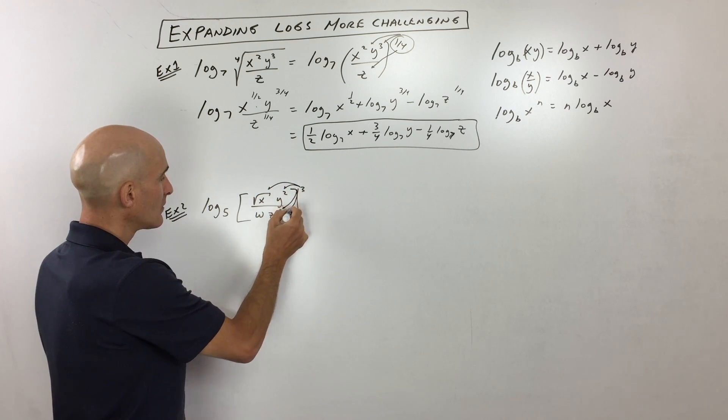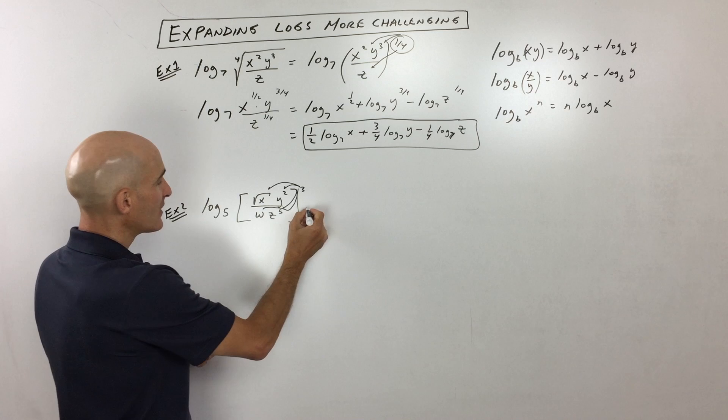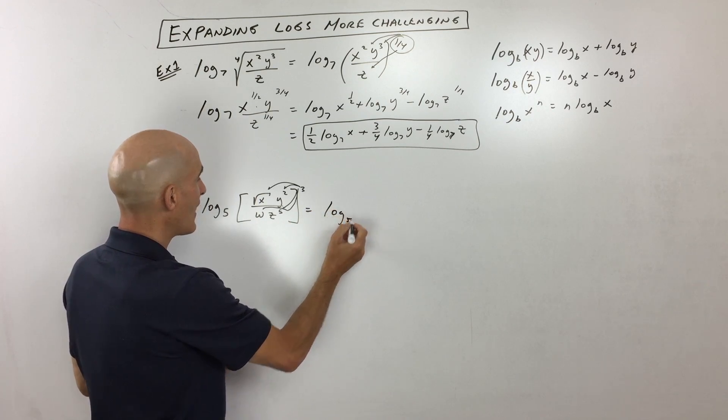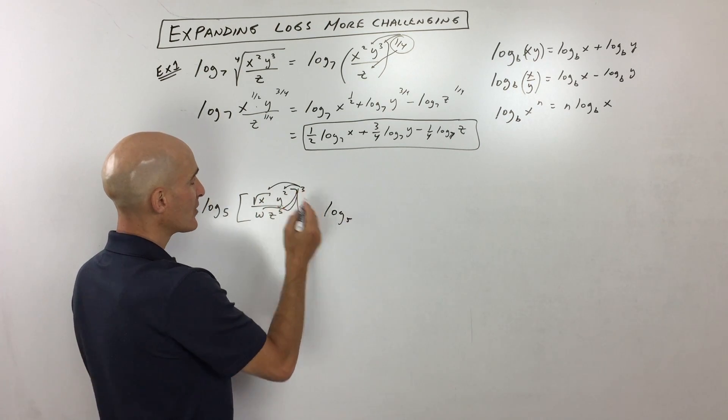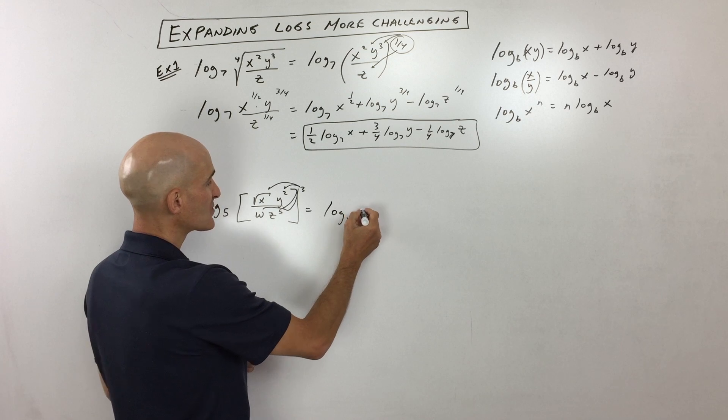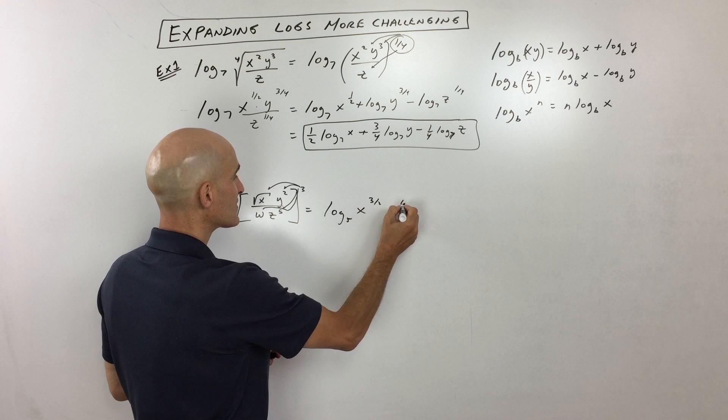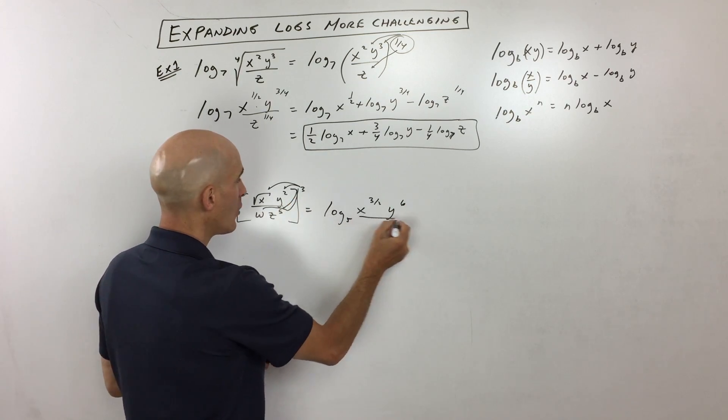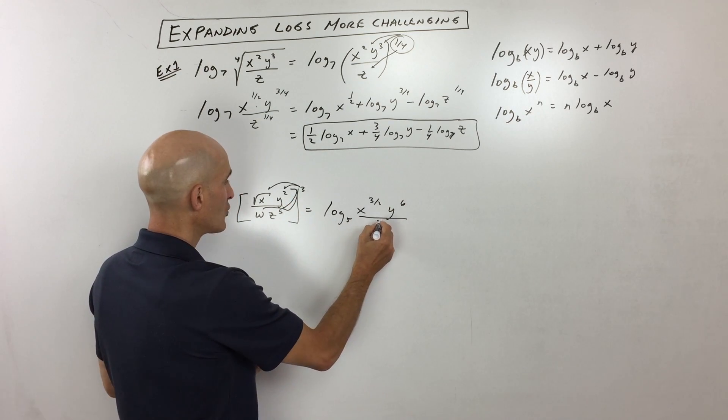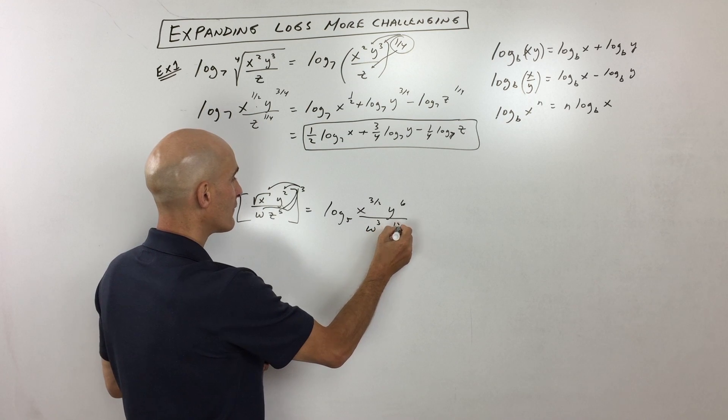what we get is we get log base five of x to the one-half raised to the third power. That's one-half times three. That's x to the three-halves, right? y to the sixth, because two times three, over w cubed z to the fifteenth.